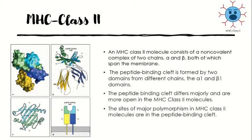The MHC class 2 molecule consists of a non-covalent complex of two chains — alpha and beta — both of which span the membrane. The MHC class 2 alpha chain is a different protein from the MHC class 1 alpha chain, and both class 2 chains are encoded within the MHC. The crystallographic structure of the MHC class 2 molecule shows it is folded very much like MHC class 1, but the peptide binding cleft is formed by the alpha 1 and beta 1 domains of different chains. A major difference is that the ends of the peptide binding cleft are more open in MHC class 2, so the ends of a bound peptide are not buried as they are in MHC class 1.